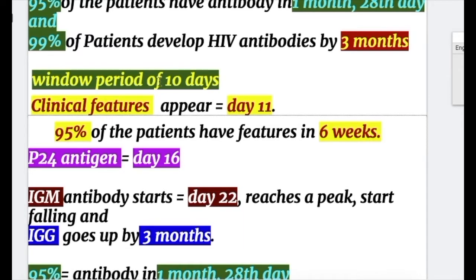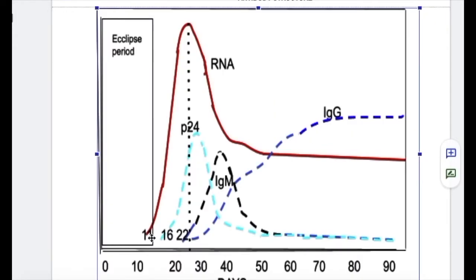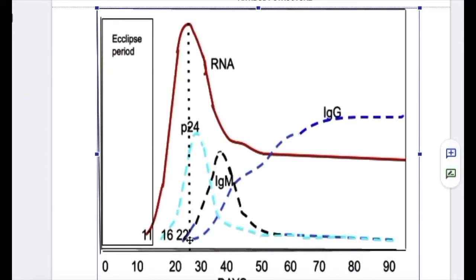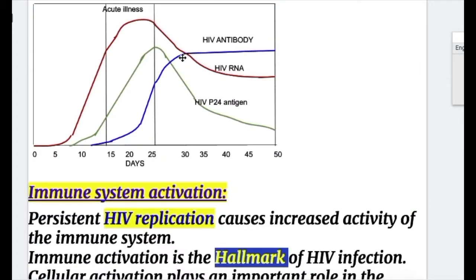To recap: the window period is 10 days; clinical features appear on day 11; p24 antigen appears on day 16; IgM antibody starts on day 22, reaches a peak, then falls; IgG rises and maintains a steady state at three months, coinciding with the peak of clinical features and p24 antigen.